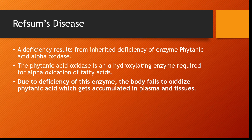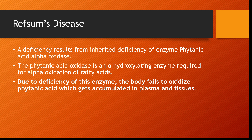If there is any inherited deficiency in the enzyme phytanic acid alpha oxidase, it will lead to a disease called Refsum's disease. In Refsum's disease, phytanic acid oxidase will be absent. This phytanic acid oxidase is a hydroxylating enzyme which is required for the alpha oxidation of fatty acid. Due to the lack of this enzyme, the body fails to oxidize phytanic acid so that it gets accumulated in the plasma and tissues. This disease is characterized by neurological symptoms such as peripheral neuritis, cerebellar ataxia, retinitis pigmentosa.